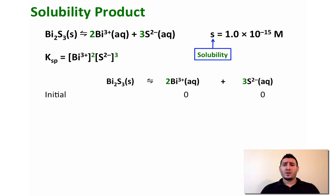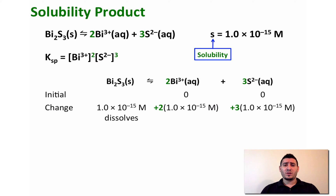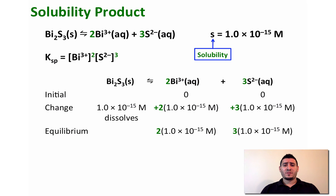Writing the ICE table for this equilibrium: initially we had no bismuth nor sulfide. After the change, 1.0×10⁻¹⁵ mol/L of bismuth sulfide dissolves, giving 2×(1.0×10⁻¹⁵) M of Bi³⁺ and 3×(1.0×10⁻¹⁵) M of S²⁻. The coefficients 2 and 3 are taken from the stoichiometric coefficients of the equilibrium. At equilibrium, these are the concentrations of Bi³⁺ and S²⁻.